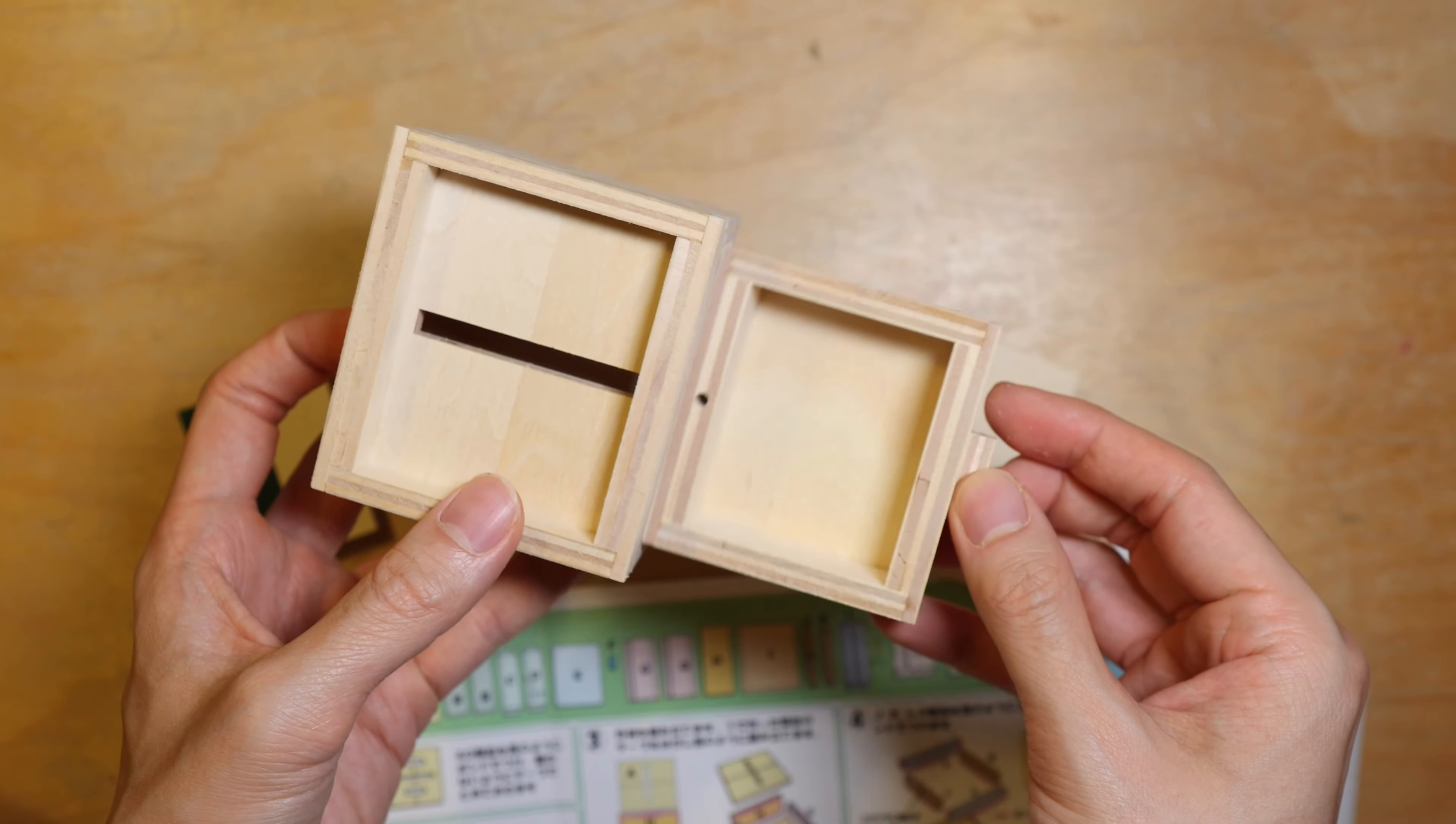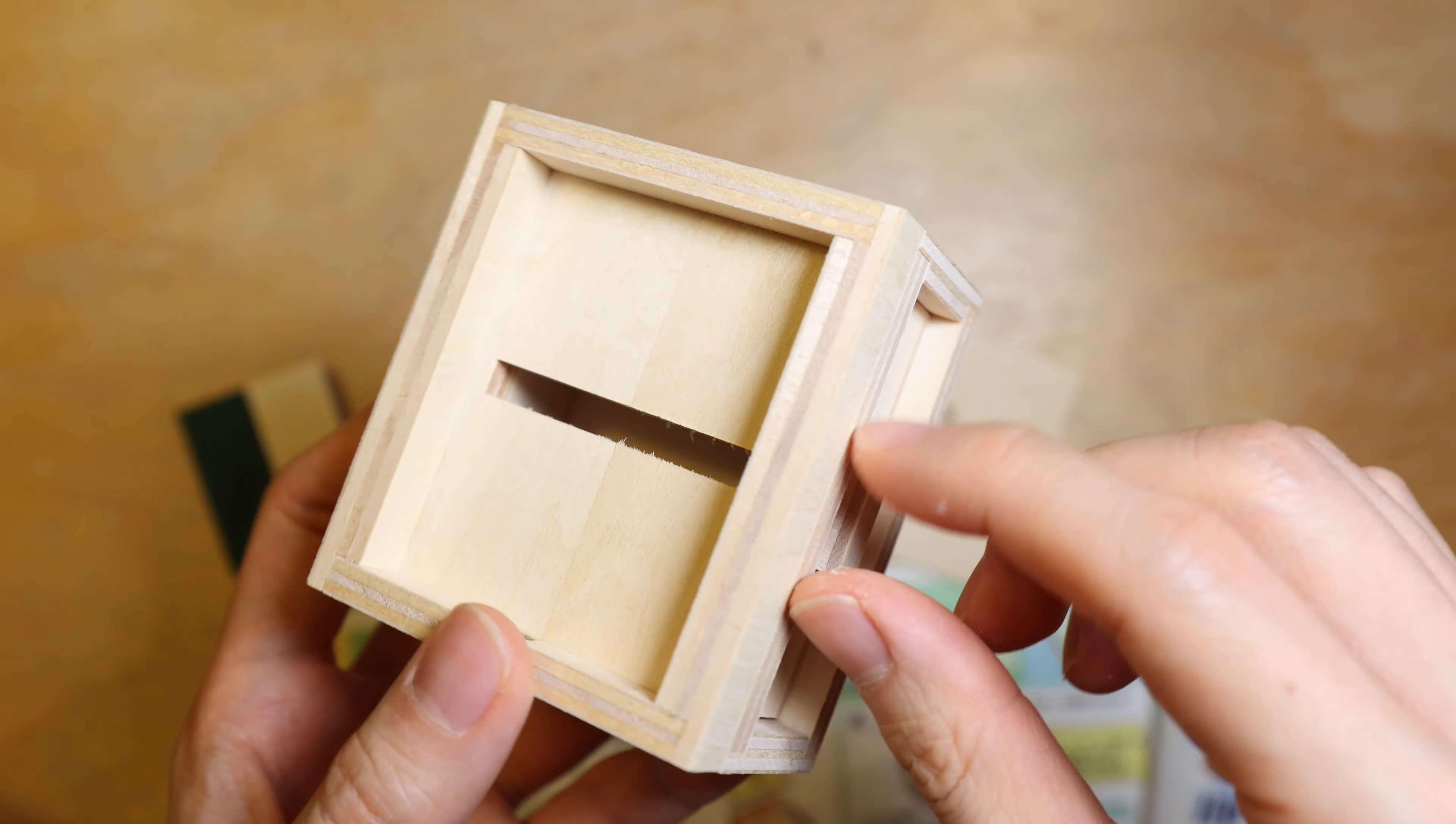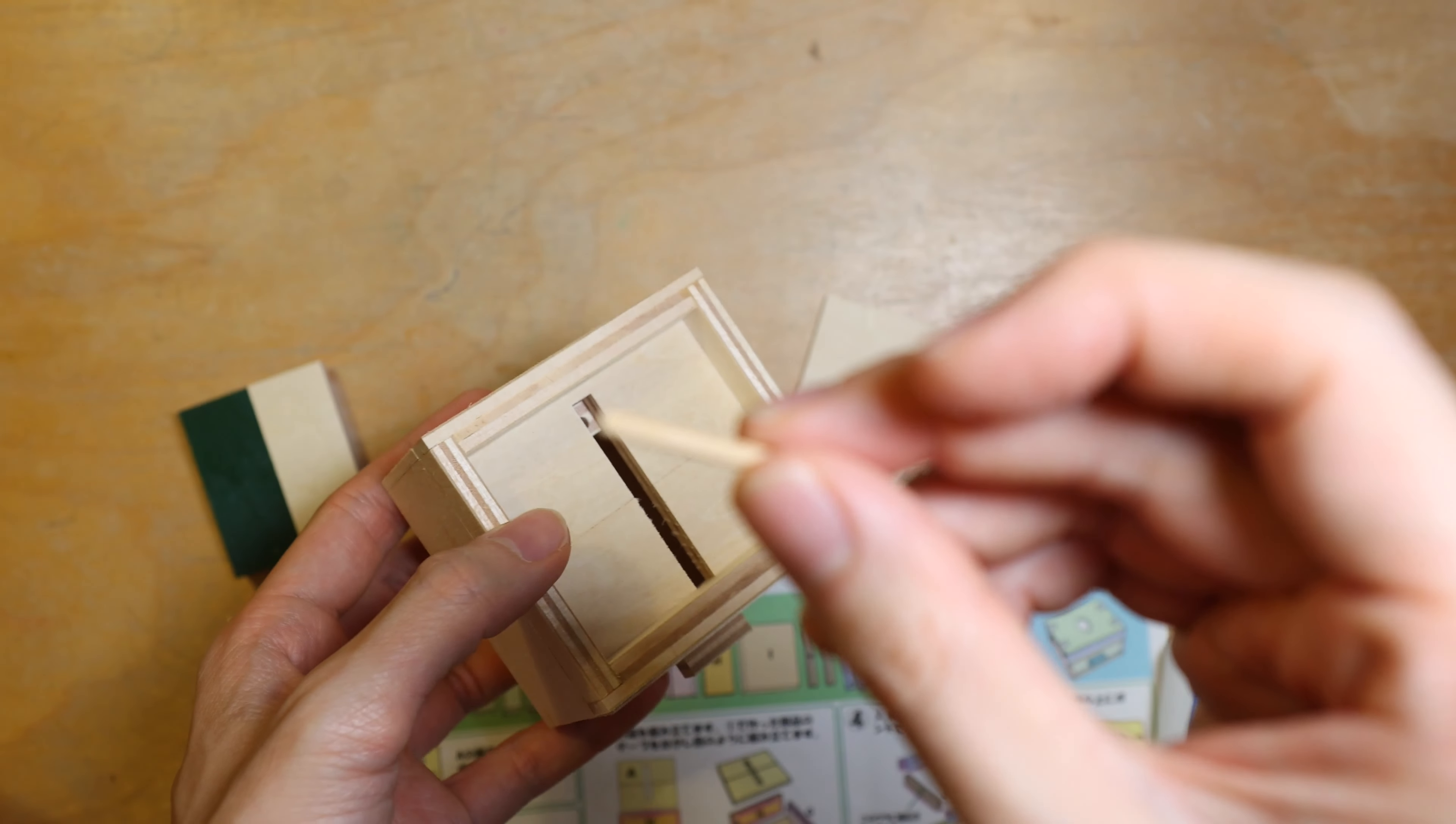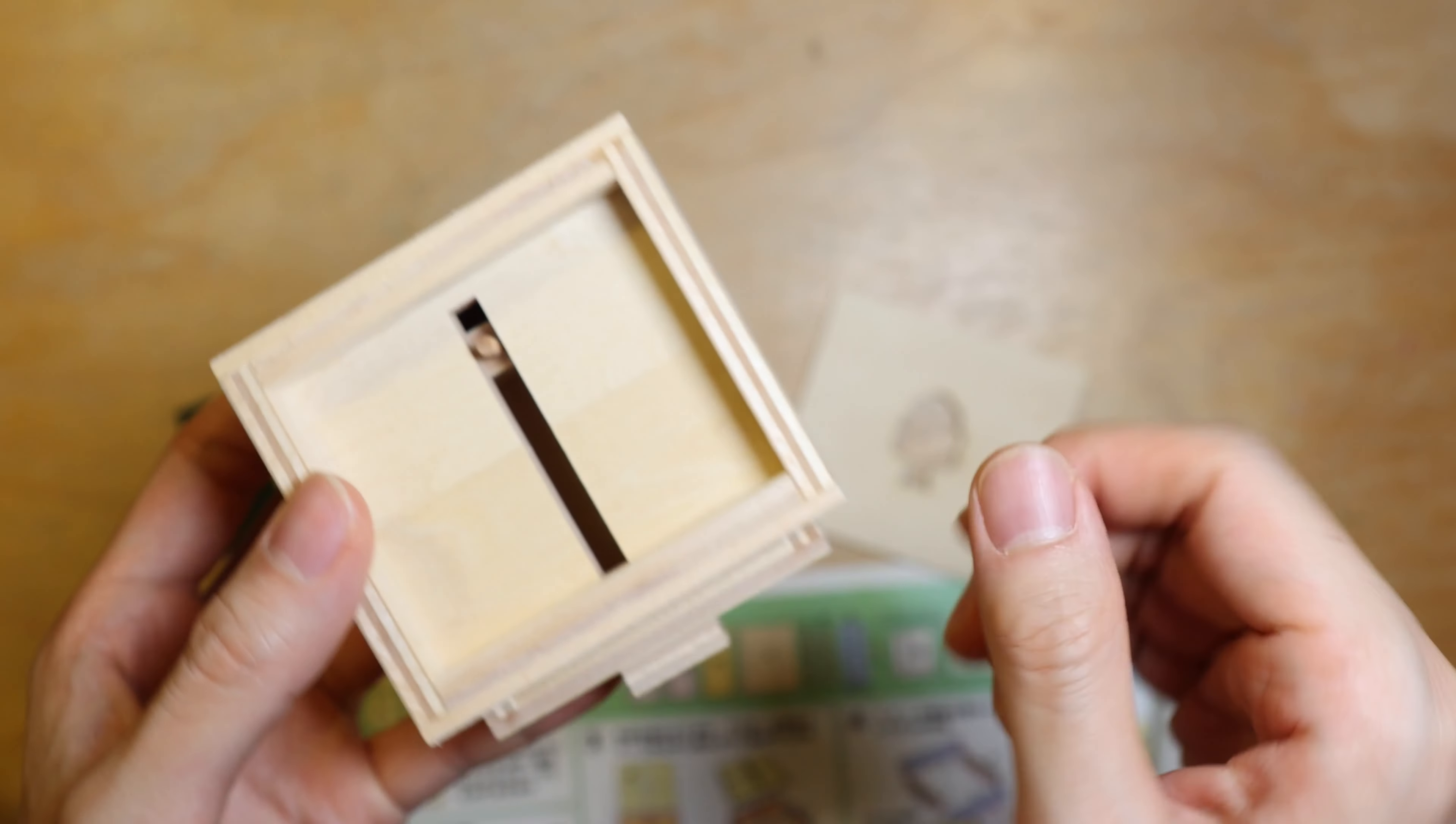Before closing up the box, let me show you the mechanism. The drawer goes in like this, and it slides smoothly as all the karakuri puzzle boxes do. Then the hole at the back of the drawer is for this pole, which fits through the slit and into the drawer, like so.